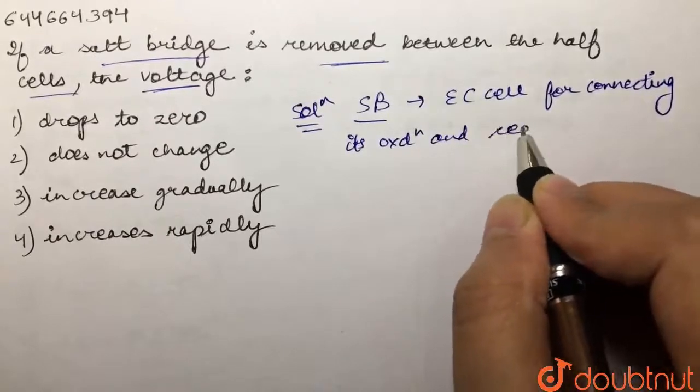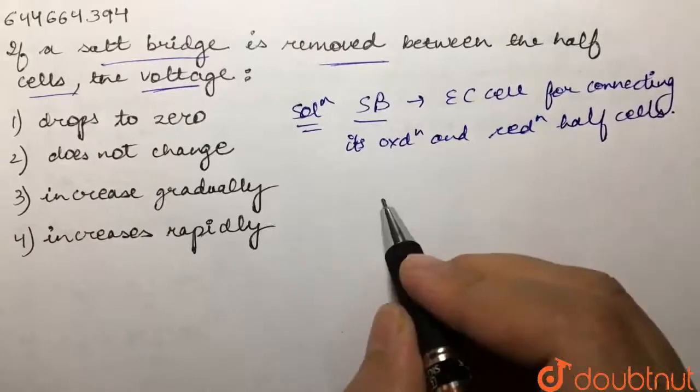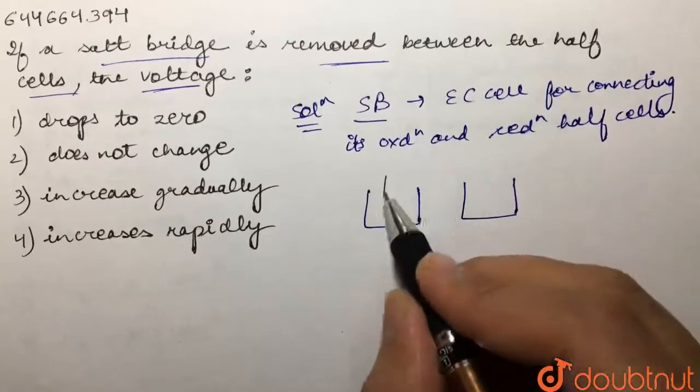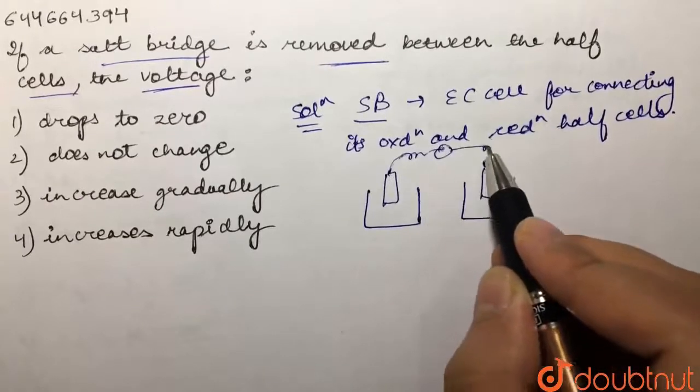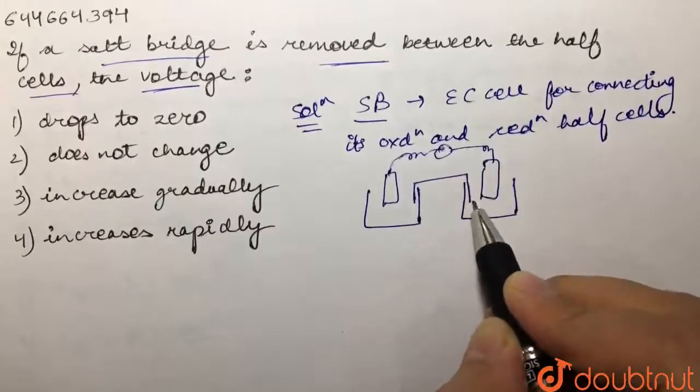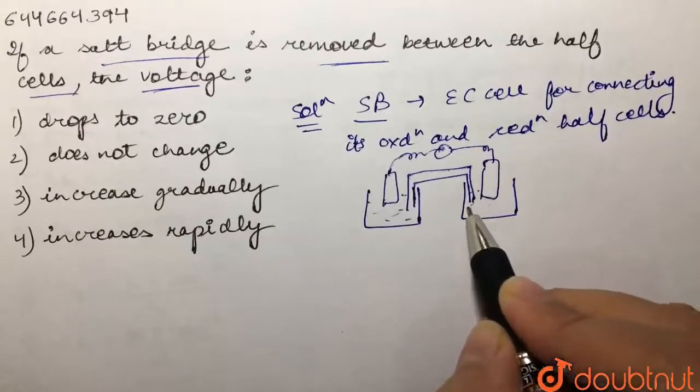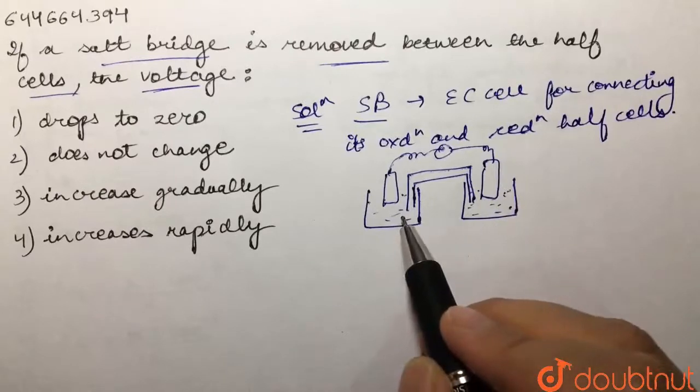reduction half cells. We have, for example, two half cells with electrodes that are connected, and we have a salt bridge present like this. We have solution in both half cells. It's basically connecting our oxidation and reduction half